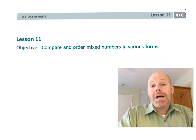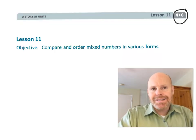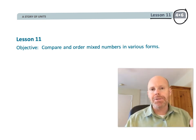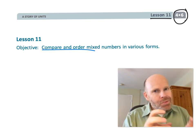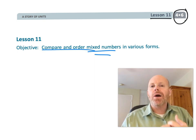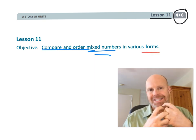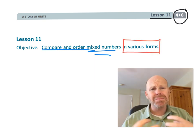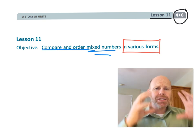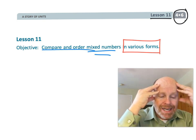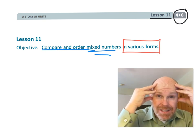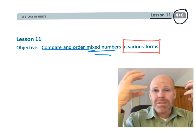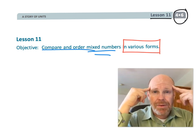This is fourth grade module 6 lesson 11. In this lesson we're going to continue comparing and ordering mixed numbers, but there's going to be a little twist because those numbers are not always going to be in standard form. We're going to have some fractions, some decimals, some improper fractions. This lesson is really going to assess whether your students have fluency and flexibility in thinking about numbers.